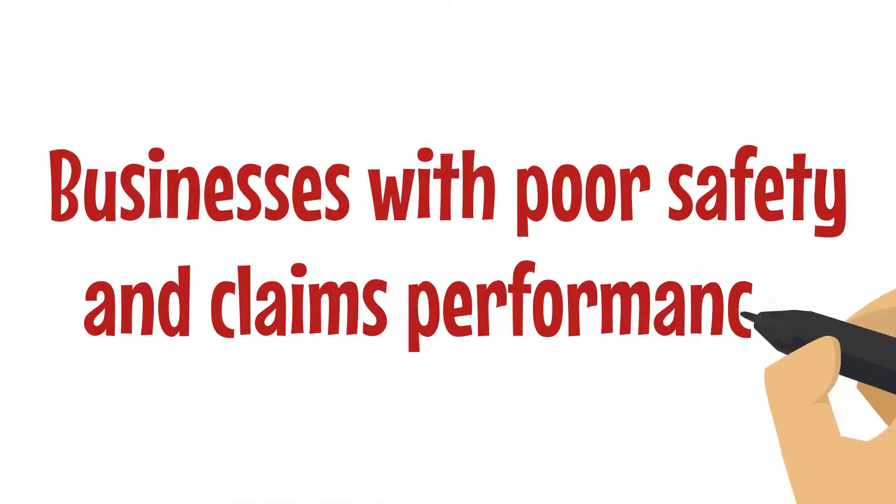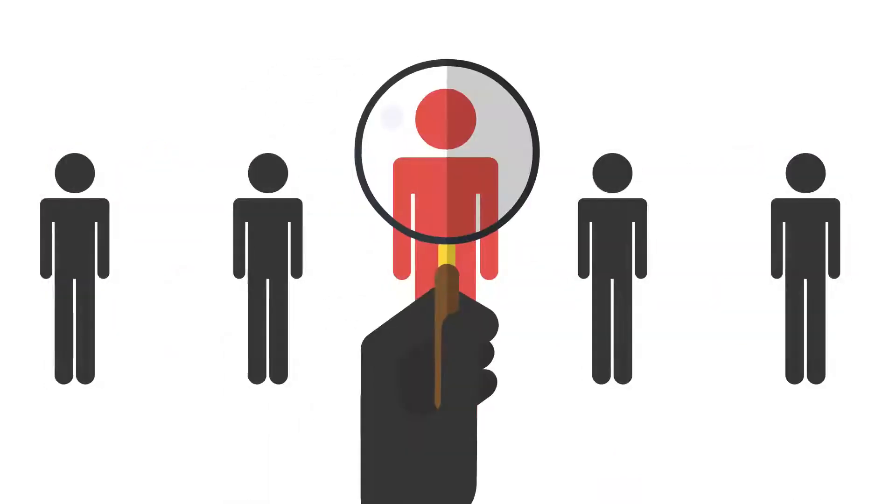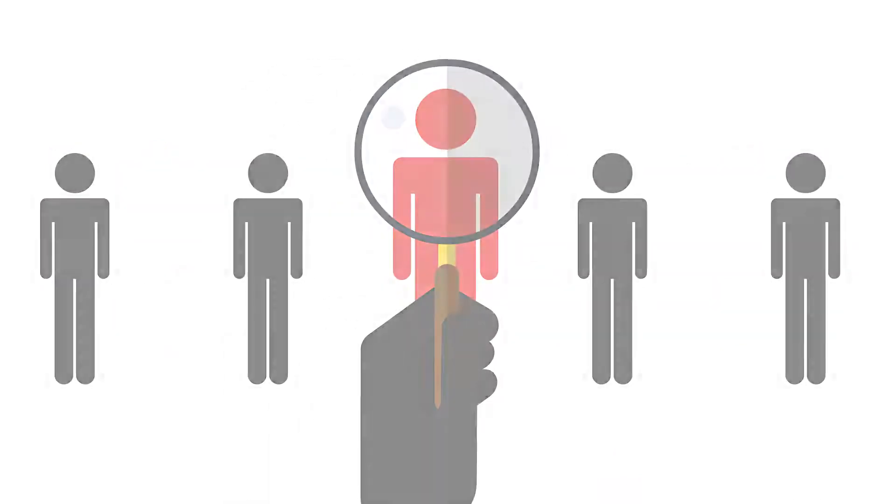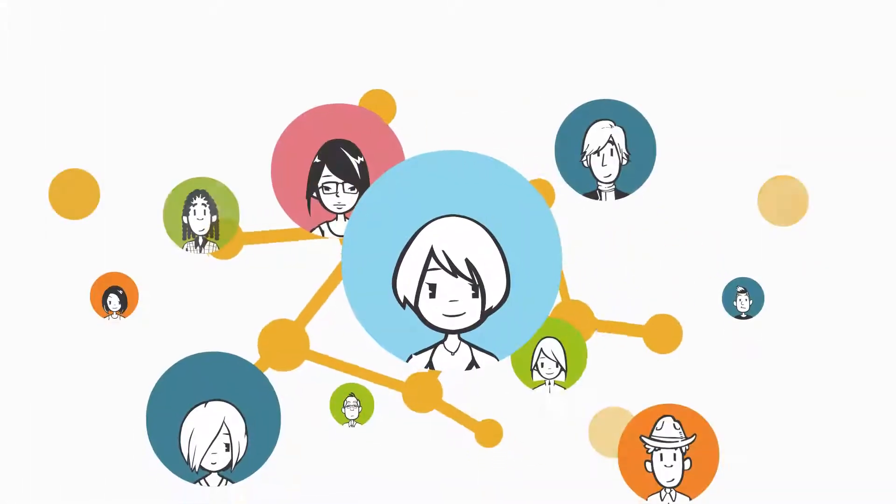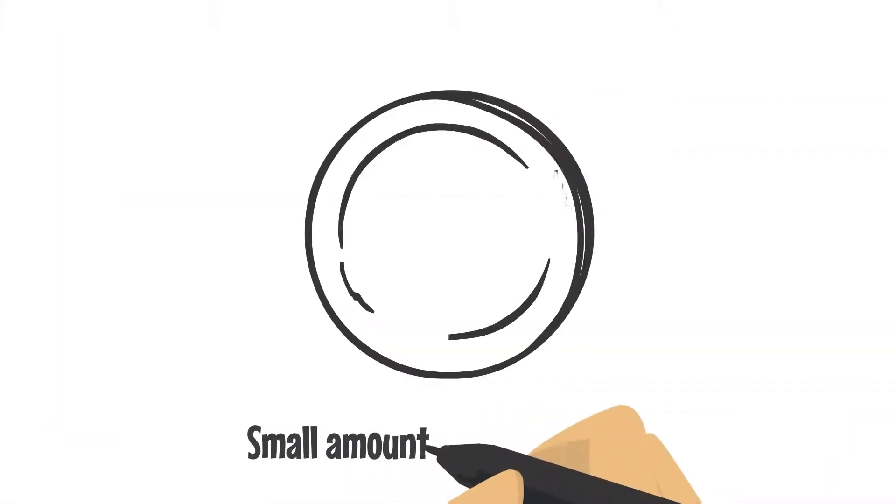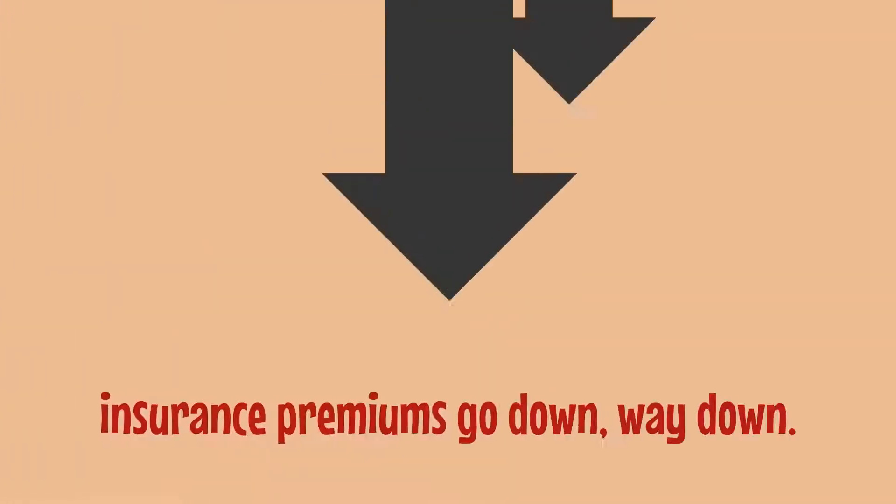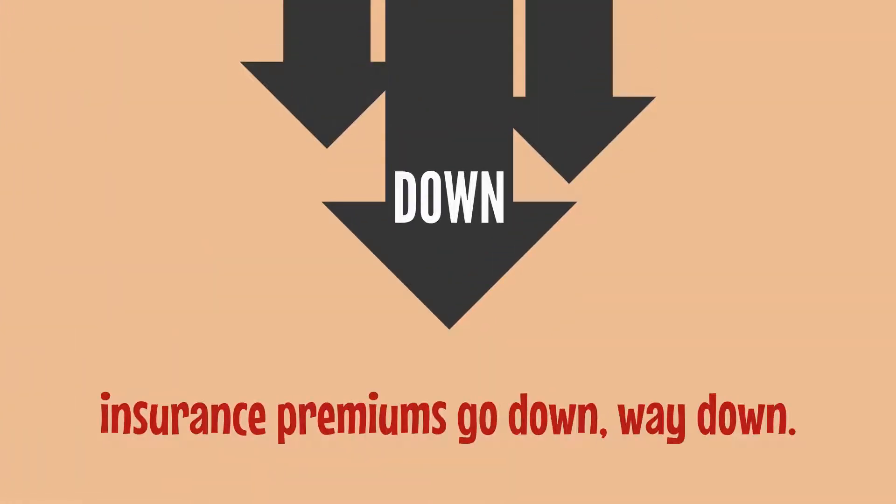Businesses with poor safety and claims performances that drive up premiums do not qualify for the group. As a result, the number and severity of claims is low. And because members of the captive all share in a small amount of collective risk, their insurance premiums go down. Way down.